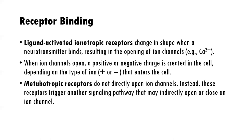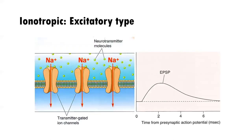Metabotropic receptors do not directly open ion channels. Instead, the receptors trigger another signaling pathway that may indirectly open or close an ion channel. The ligand-activated ionotropic excitatory type means direct entry with greater likelihood of an action potential — excitatory means increased likelihood of action potential, meaning positive ions enter the cell.